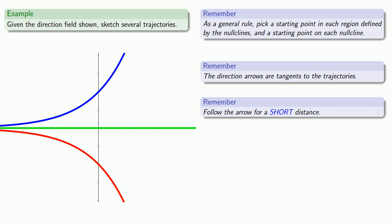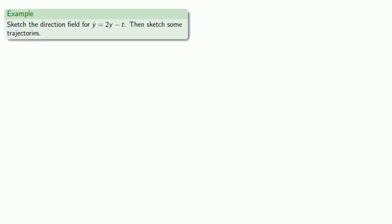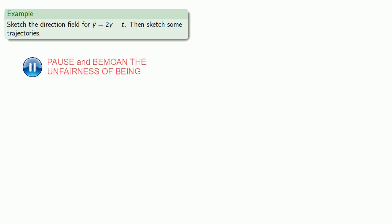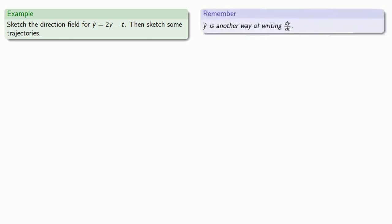And so this gives us three distinct trajectories for this direction field. Now with a kind and gentle math teacher, you'd always be given the direction field. But you don't have that sort of math teacher — you have me. And that means you may have to sketch the direction field from the differential equation before trying to sketch some of the trajectories. So let's sketch the direction field for y-dot equals 2y minus t. Remember, y-dot is another way of writing dy/dt.